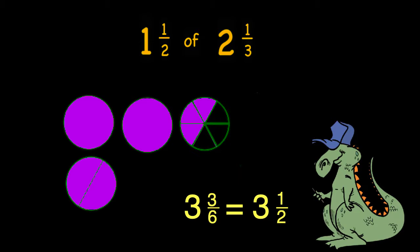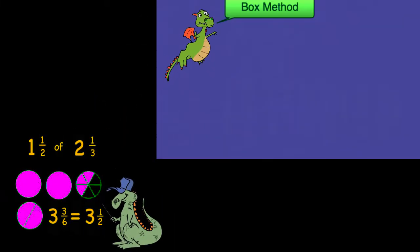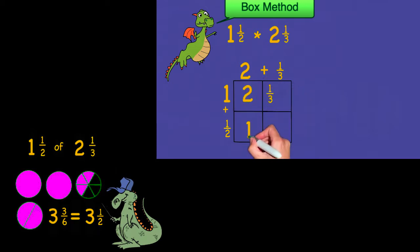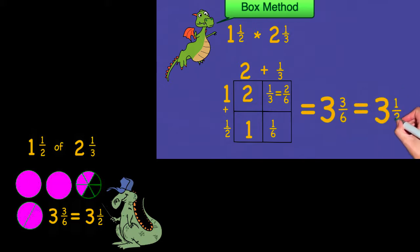Even though I can solve this by drawing, sometimes it's easier to just multiply it out. I'm going to demonstrate how using the multiplication array. I have one plus a half times two plus a third. So when I multiply that out I get two plus a third plus one plus one-sixth. I notice that my common denominator would be six, and when I add those I get three and three-sixths, which simplifies to three and a half.